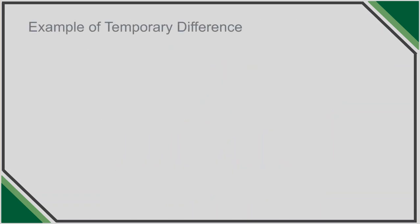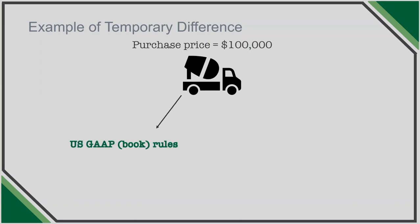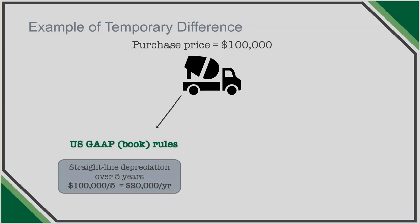Let's start by understanding how temporary differences arise and then discuss how they're recorded by using a simple example. Let's assume a company purchases a truck prior to January 1, 2018 for $100,000. Under US GAAP, the company determines the truck is five-year property depreciated using straight-line convention, resulting in $20,000 of depreciation per year.